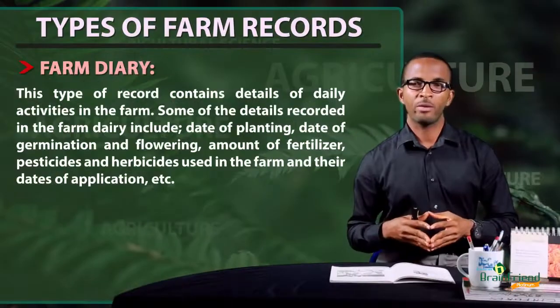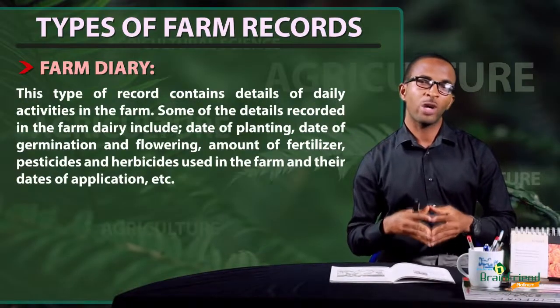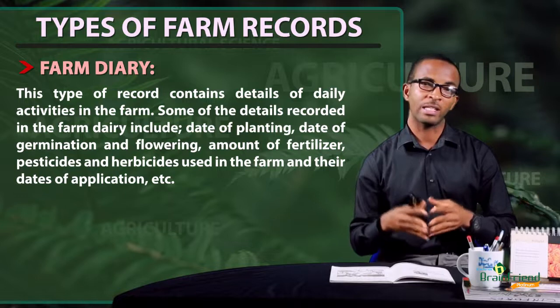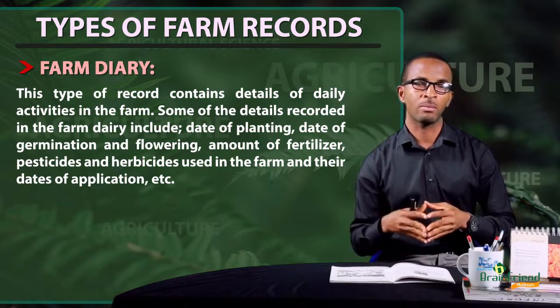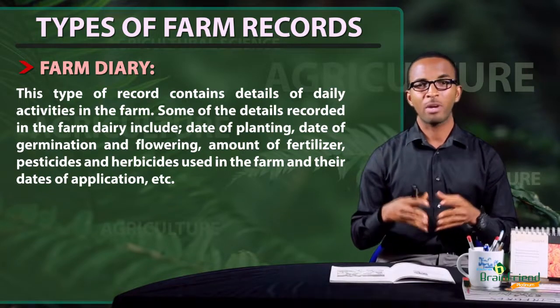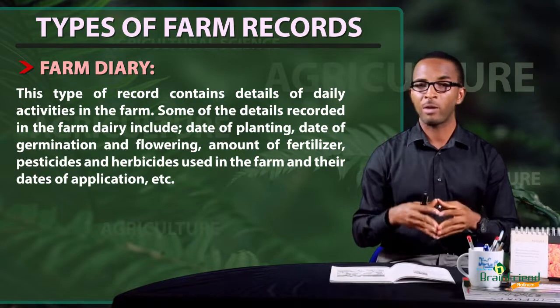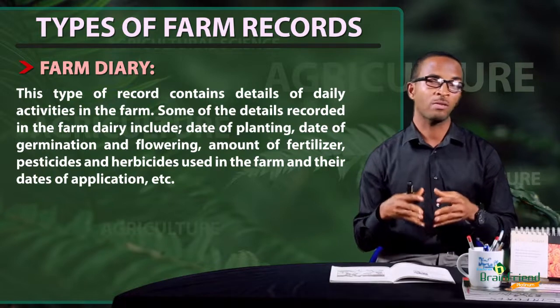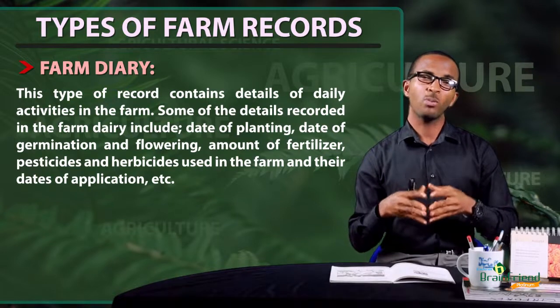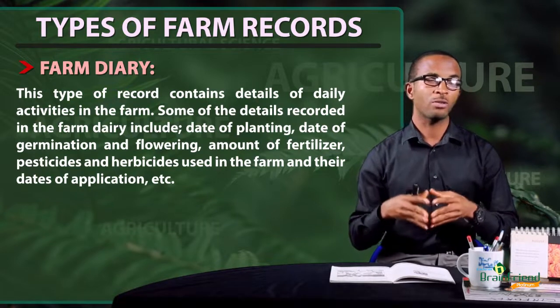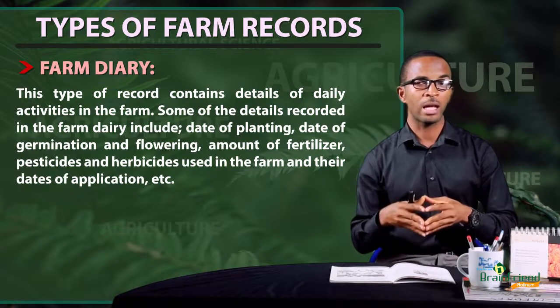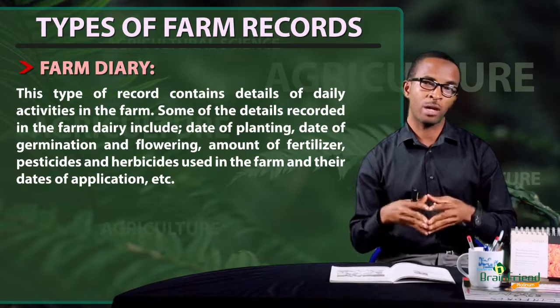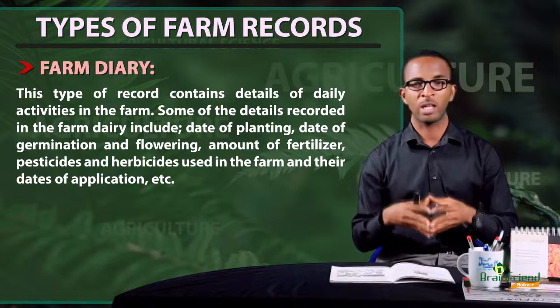Now let us look at different types of farm records. Farm diary: this type of record is used to keep account of daily activities happening on a farm. Some things a farmer would record in a farm diary include the date of planting his crops, date of germination as well as flowering, and the amount of fertilizer, pesticides, and herbicides applied on his farm as well as the date of application.